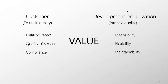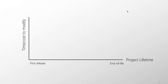Today we're going to focus much on intrinsic quality. Here's a good way of thinking about it: a graph showing a project's lifetime from first release to end of life. For some projects — military and aerospace in particular — that lifetime could be 10, 20, 30, even 50 years, with the system updated and extended throughout. On the y-axis we have the time and cost to add new features.